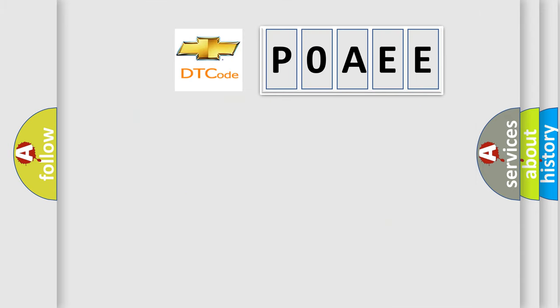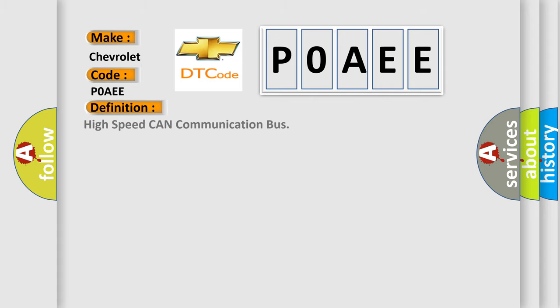So, what does the Diagnostic Trouble Code interpret specifically for Chevrolet car manufacturers? The basic definition is High-speed CAN communication bus. And now this is a short description of this DTC code.